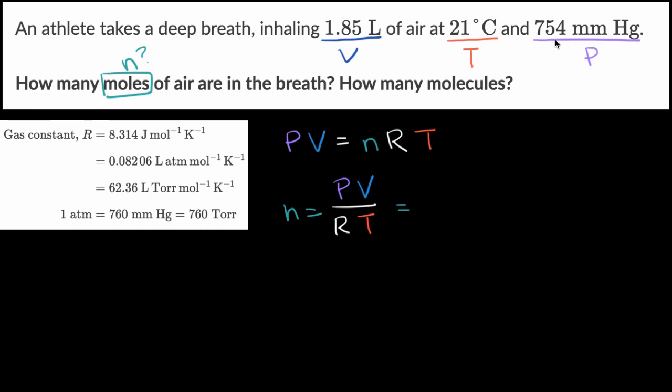And so this is going to be equal to what? Well, our pressure is 754 millimeters of mercury. Now, where they give us the ideal gas constant, you don't see any that deal with millimeters of mercury. But they do tell us that each millimeter of mercury is equal to a torr. For the purposes of a first year chemistry class, you can view the pressure here as 754 torr.